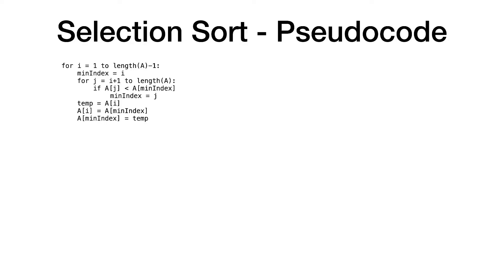Let's take a look at the selection sort algorithm through the use of pseudocode. The general idea is that we have two subarrays: a sorted subarray and an unsorted subarray. When we begin, the sorted subarray is empty and the unsorted subarray consists of all the elements in A. The algorithm searches through the unsorted subarray looking for the smallest element, keeping track of this through the use of minindex. We then swap the minimum element with the leftmost unsorted element, thus building up the sorted subarray on the left-hand side and shrinking the unsorted subarray on the right.